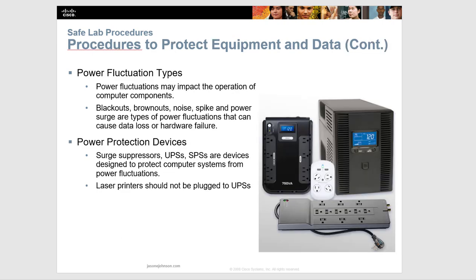With power fluctuations, all devices need power and there are different types of fluctuations. A blackout is a complete loss of AC power, caused by a downed power line or blown fuse. A brownout is reduced voltage — it occurs when the power line voltage drops below 80% and can cause problems with electrical circuits. Electrical noise is interference from generators or lightning, producing poor quality power and causing errors in computers. A spike is a sudden increase in voltage, often caused by lightning strikes or when an electrical system comes back on after a blackout.